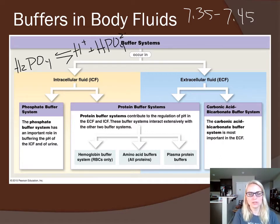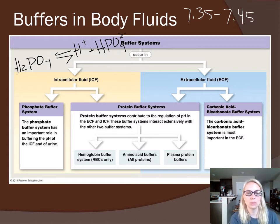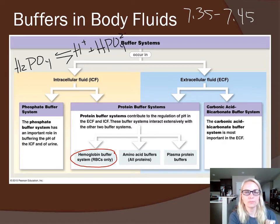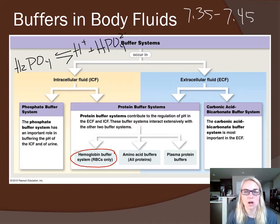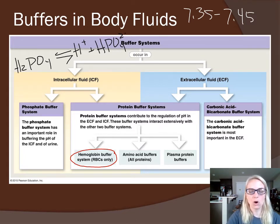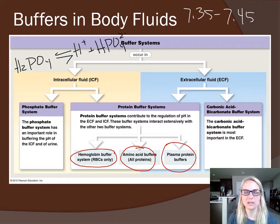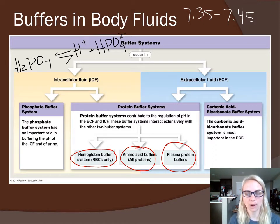Protein buffers can be found both inside and outside of cells — wherever you find a protein, you have the ability to do protein buffering. The hemoglobin buffer is only found inside red blood cells; when CO2 dissociates, bicarbonate is kicked out into the plasma but hydrogen ions get buffered by hemoglobin. All amino acids and proteins — including plasma proteins in the ECF — can serve as buffers.